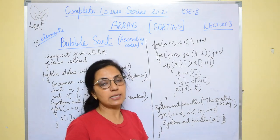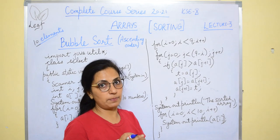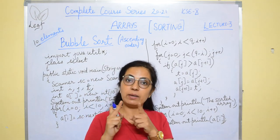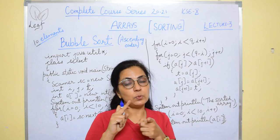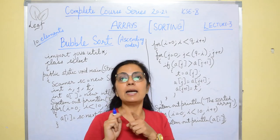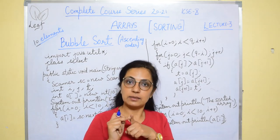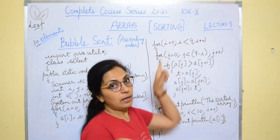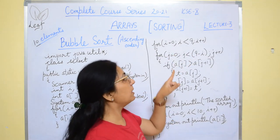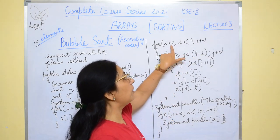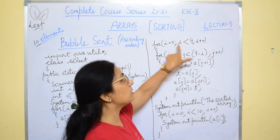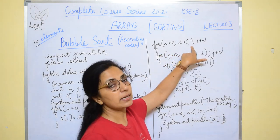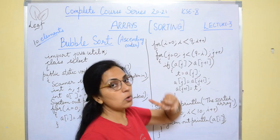From the first subscript till the second last subscript, because always the last comparison will be between the second last and last subscripts. So here in selection sort also and bubble sort also, the outer loop will go from 0 to less than size minus 1 — that is the second last subscript. In both techniques the outer loop remains the same.